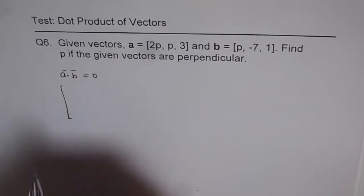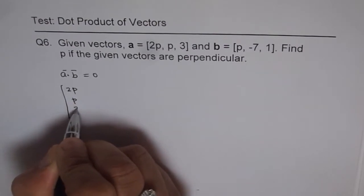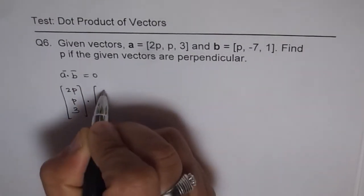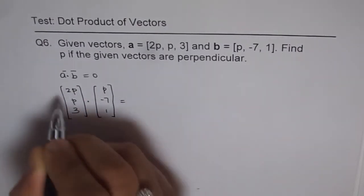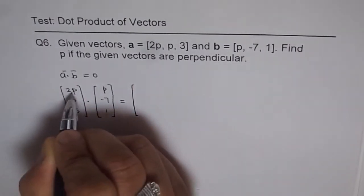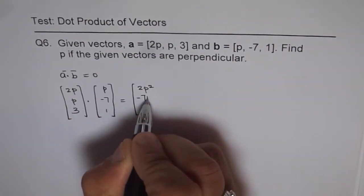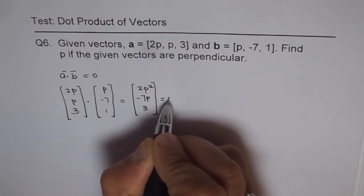We will do it using column matrix which is 2P, P and 3 dot P minus 7, 1. So it is 2P square minus 7P plus 3 and that should be equal to 0.